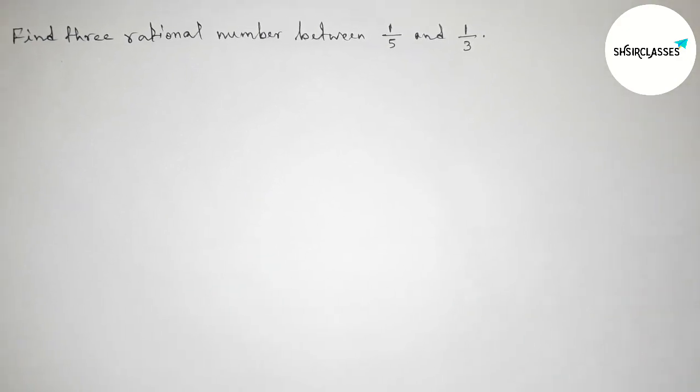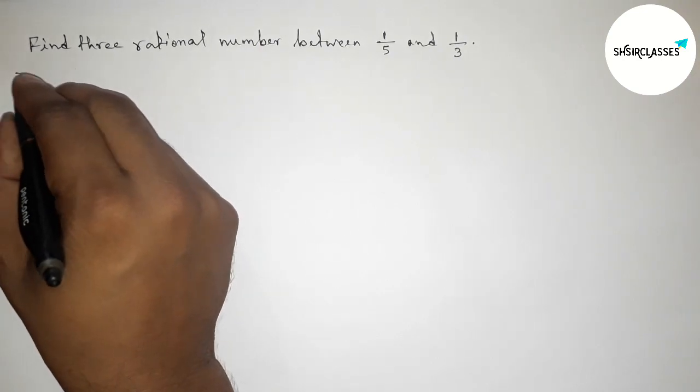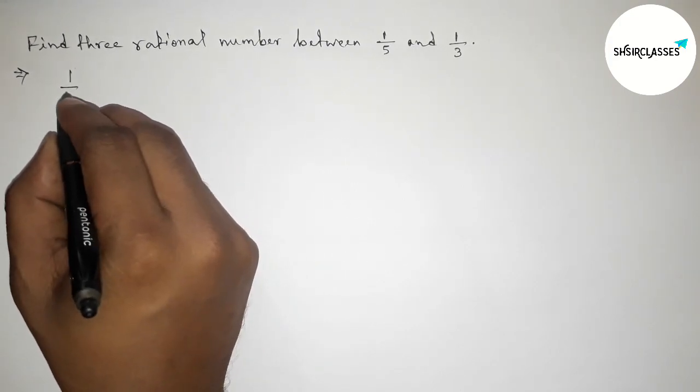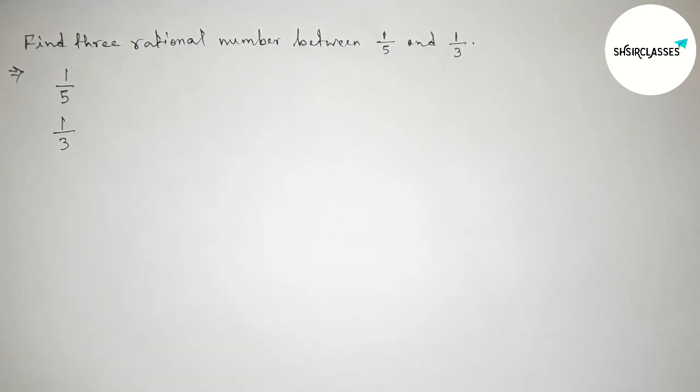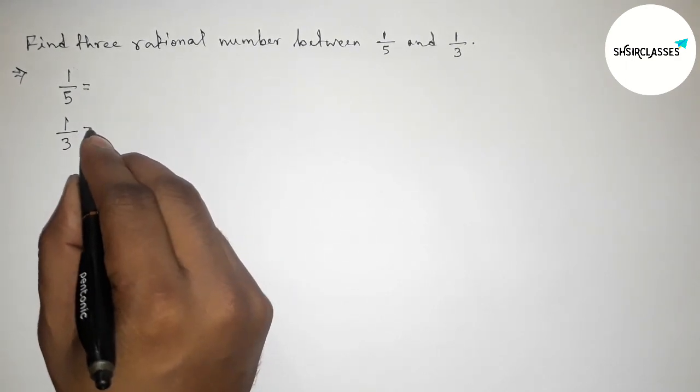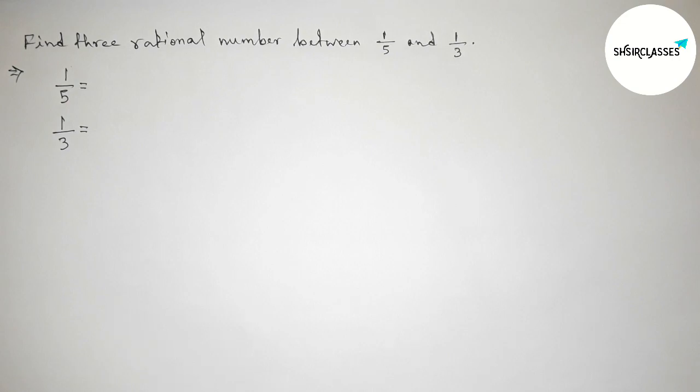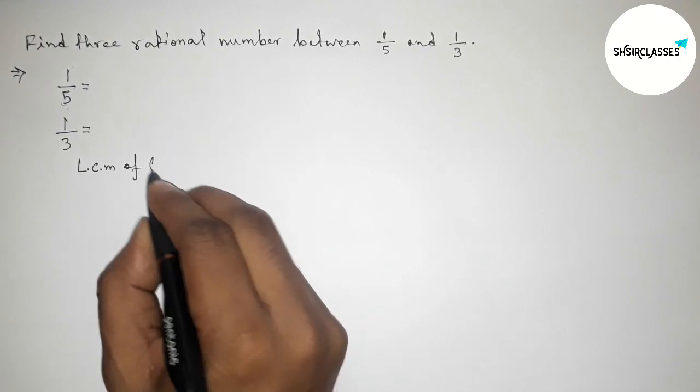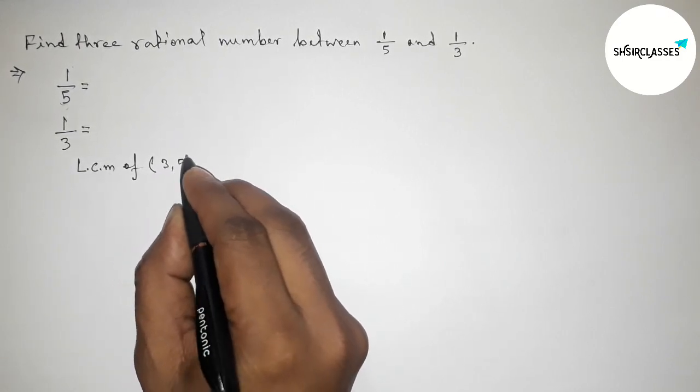First, let us solve this problem. Here given the two rational numbers 1/5 and 1/3. Now we have to make the denominators equal first. The denominators are not equal, so we're making the same denominator.